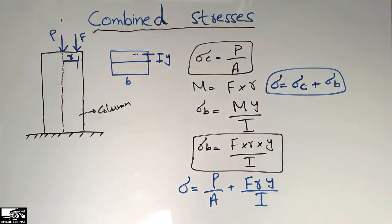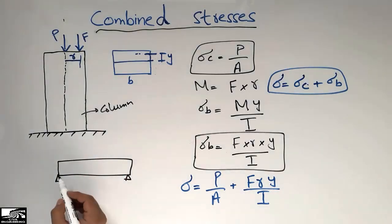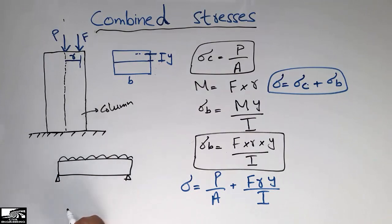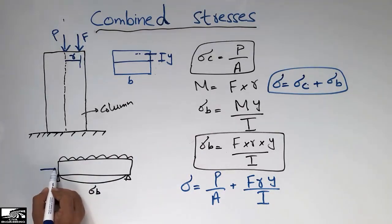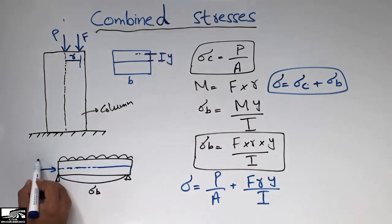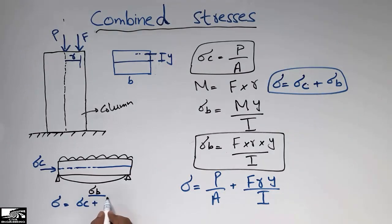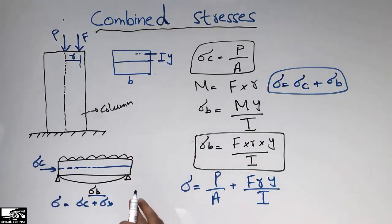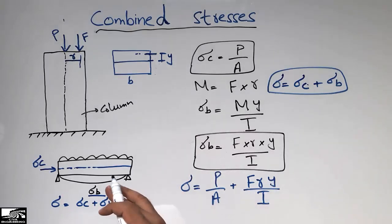Similarly, consider a simply supported beam with a uniformly distributed load. Due to this UDL we have bending stresses, represented by Sigma B. The other load acts at the centroid axis of this beam, producing axial compressive stresses. So the total stress is the combination of compressive stresses and bending stresses — that is why we call it combined stresses. In reality, structural members always experience combined stresses.